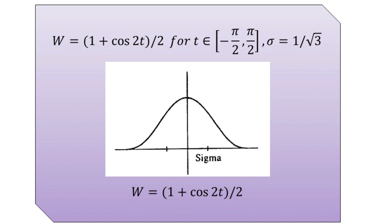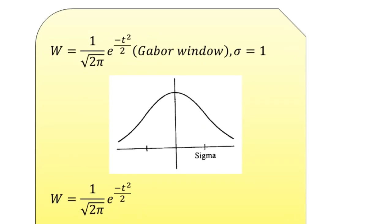The next option defines the window as (1 / √(2π)) × e^(−t²/2), also identified as a Gabor window, with the standard deviation sigma set equal to 1. The plot of this window function w = (1/√(2π)) × e^(−t²/2) is shown in the illustration. For this localized span centered at t = 0, we apply the Fourier transformation, which gives us the Windowed Fourier Transform or Short Time Fourier Transform.